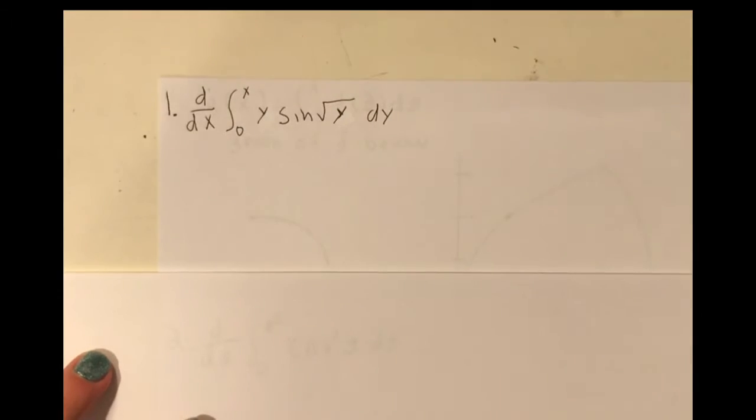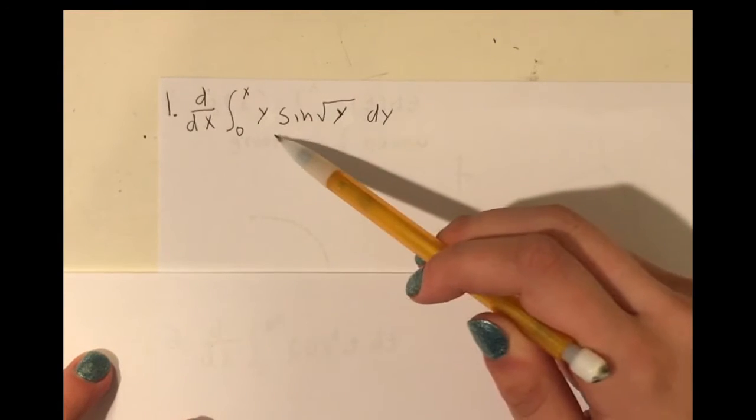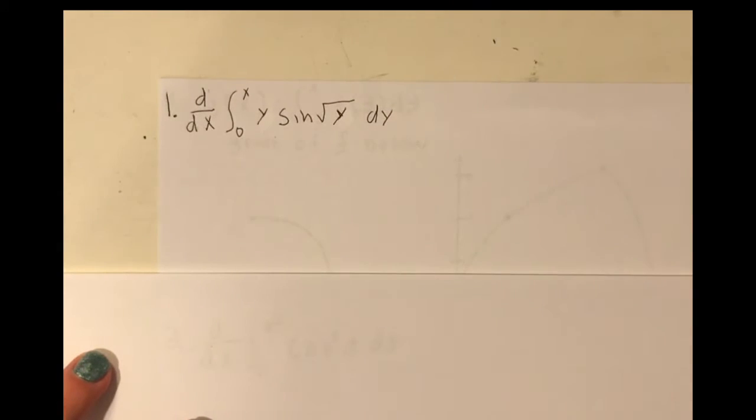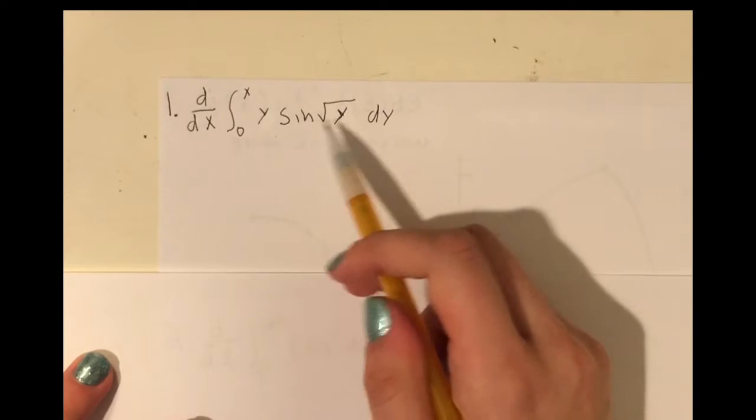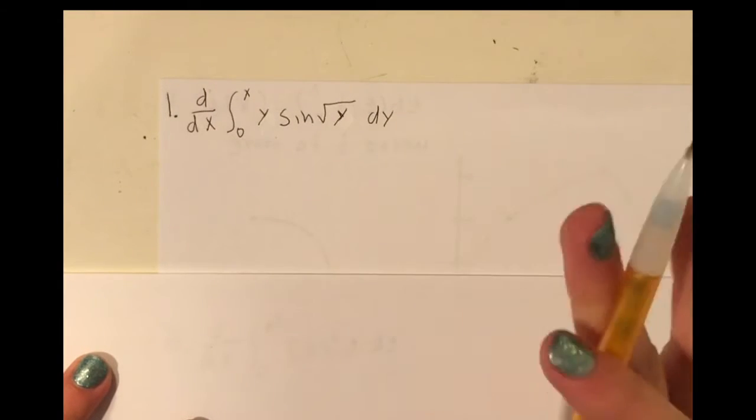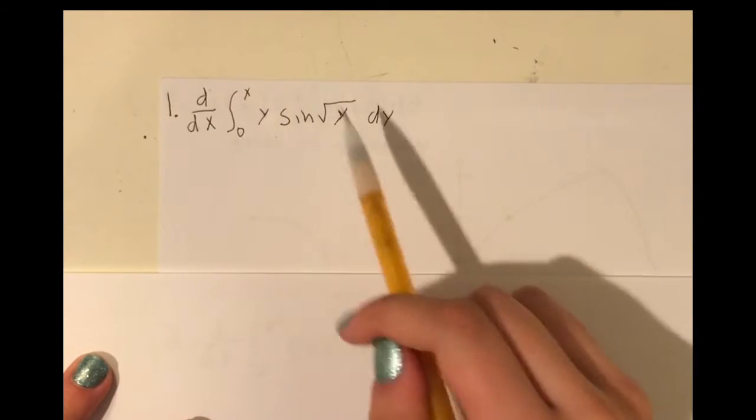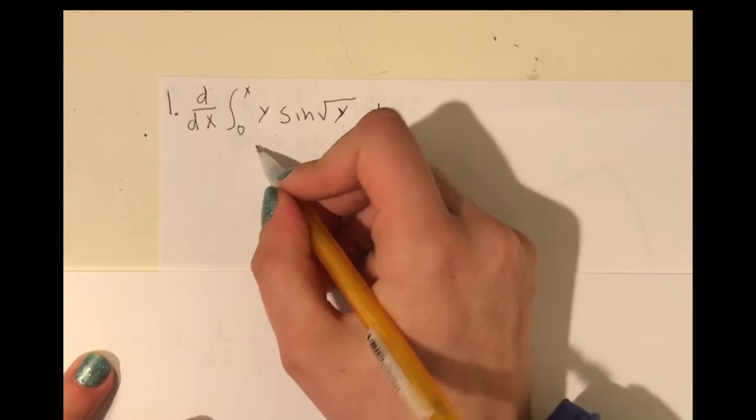Okay, d of x, you know what that means, you're a calculus student, the derivative, and then we have from 0 to x of y sine root y d of y. Now, you're probably thinking, what? What do I do? Well, don't worry, I'm going to show you. So, this problem might seem a little scary because you're thinking, I don't know how to use u-sub, I can't take the derivative, integrate it, whatever I'm supposed to do.